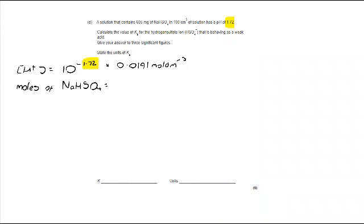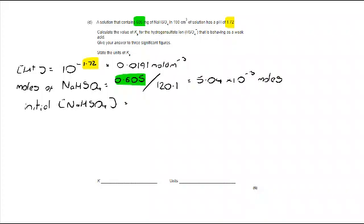Moles of NaHSO4: we're going to take our 605 milligrams, convert it to grams, 0.605 grams, and divide that by the MR of NaHSO4, calculated directly from the periodic table. 0.605 over 120.1 takes us to 5.04 by 10 to the minus 3 moles. My initial concentration of sodium hydrogen sulfate is going to be equal to the initial concentration of HSO4 minus because it's going to fully dissociate. That means my concentration of HSO4 minus is 5.04 by 10 to the minus 3, but we're going to multiply that by 10 because we're not using a tighter value, we're using the volume that we've made. That takes us to 5.04 by 10 to the minus 2.